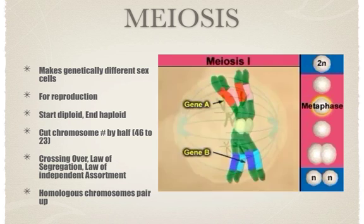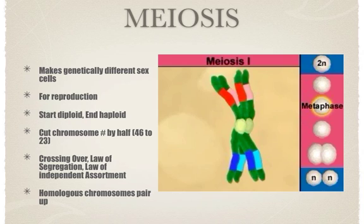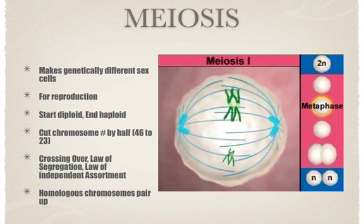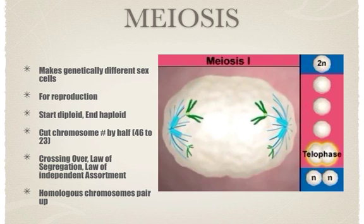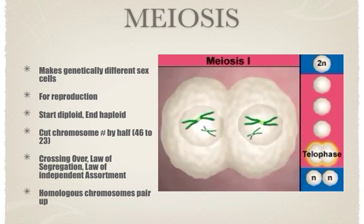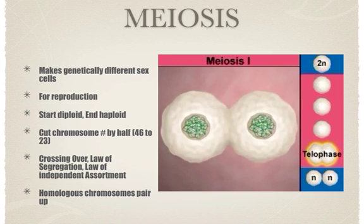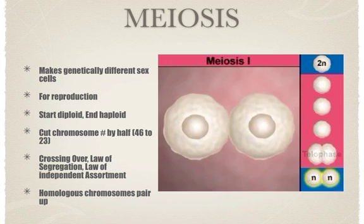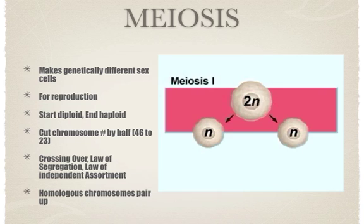During meiosis one, homologous chromosomes come together at the equator of the cell — this process is called synapsis. When two homologous chromosomes get close together, pieces of their chromatids are often traded. Next, the homologous chromosomes separate and move toward opposite poles of the cell, ensuring each new cell gets one chromosome from each pair. The two chromatids of each chromosome stay attached by their centromeres. Cytokinesis then divides the cell, so in meiosis one we go from one nucleus with two sets of chromosomes to two nuclei with one set of chromosomes.